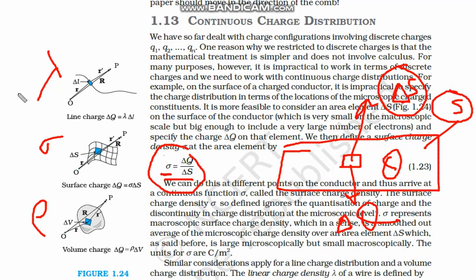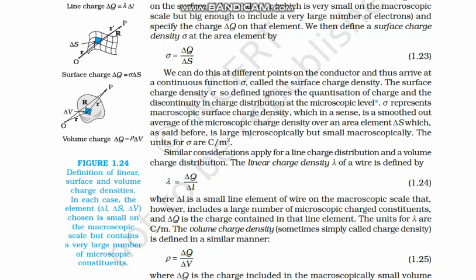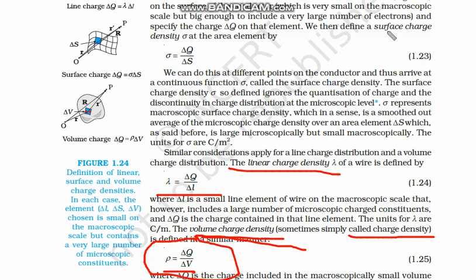The symbols are: lambda for linear charge density, sigma for surface charge density, and rho for volume charge density. For volume charge density, this is simply delta-q divided by delta-V, where delta-V is a small volume with a very small charge delta-q. Volume charge density is also simply called charge density.